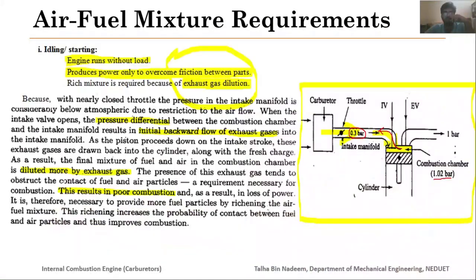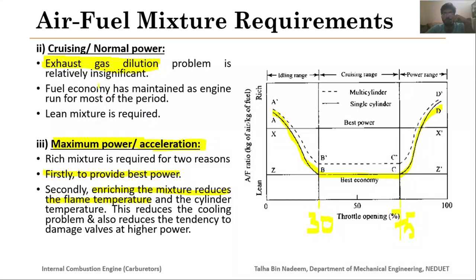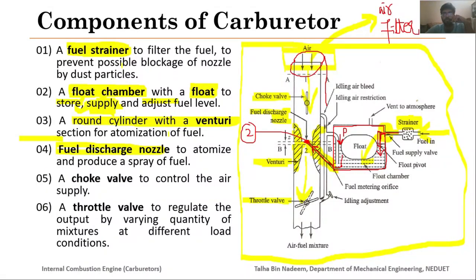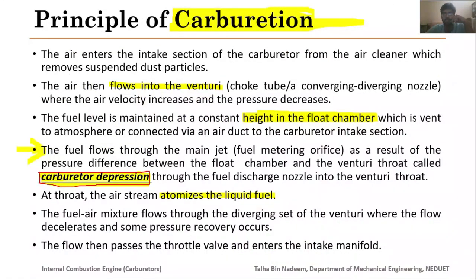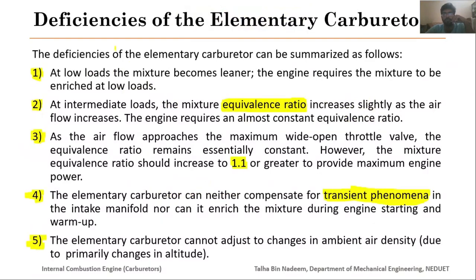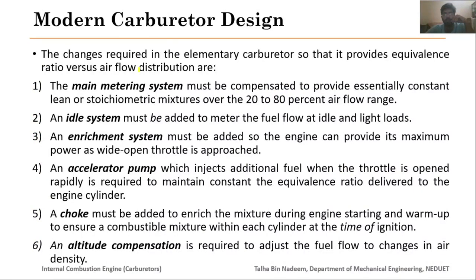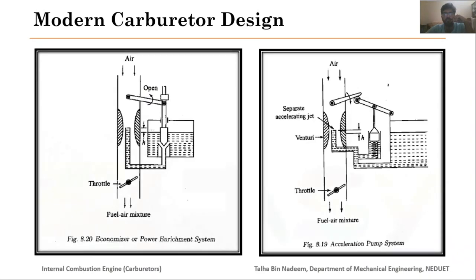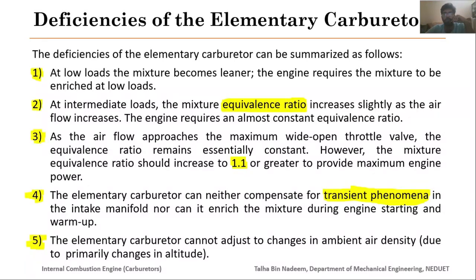So today we studied the different operating conditions — idling and starting, cruising and normal power, and maximum power or acceleration. Then we discussed the basic components of a carburetor in detail. Then we studied the principle of carburetion, and finally the deficiencies of the elementary carburetor. In the next class we will discuss additional equipment incorporated in modern carburetors to overcome all of these deficiencies. I request all of you to go through these lectures carefully so that you may not have any problems in the next classes.